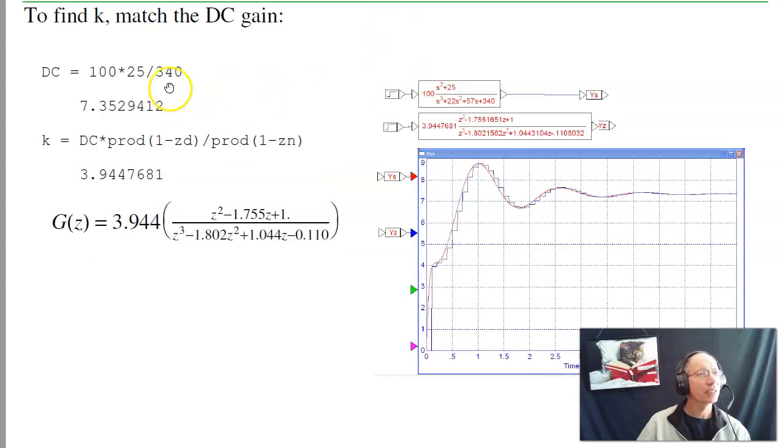To get the gain up top, the DC gain of G(s), DC gain of G(z), take the ratio, and that's the gain you need to match the DC gain. So that's my discrete time equivalent. And if it's the same system, they should have the same step response. Take the step response of the two. Here's your s continuous time system. Here's your discrete time system. Notice with lots and lots of decimal places. And if you look at the step response, yep, they're the same.